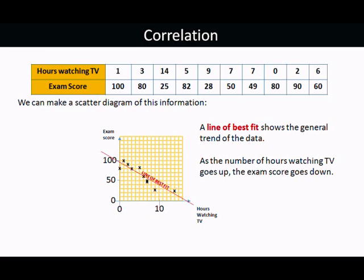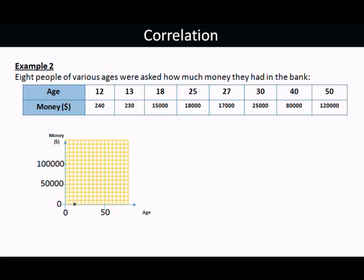As we've said, as the number of hours watching TV goes up, the exam score goes down. We say that those two variables are negatively correlated. Negative because the graph is going down. As one increases, the other decreases.